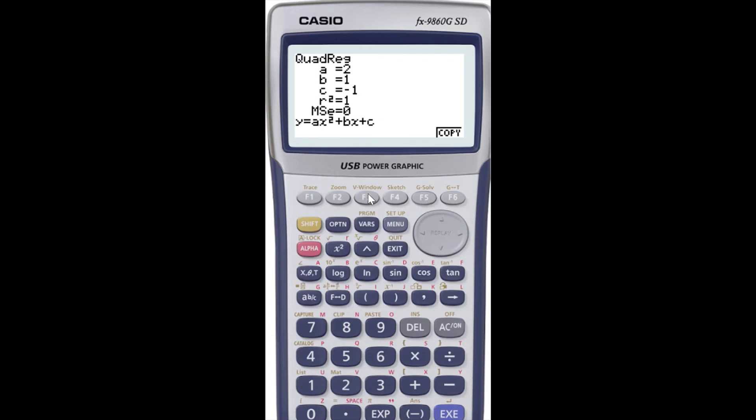There you have it. It gives you the A, B, and C values that you can replace in the general form to get the equation. So this reads A is 2, so 2X² plus 1X which is X, and then minus 1.